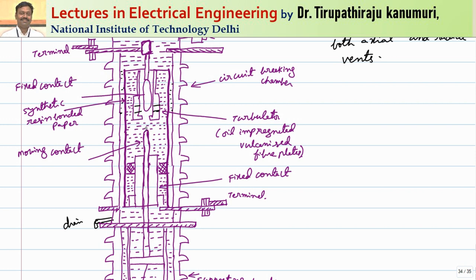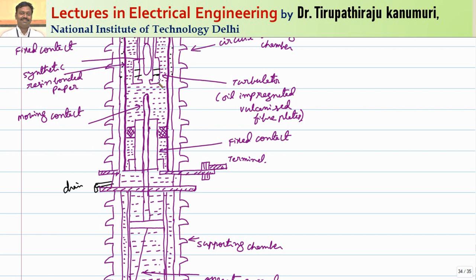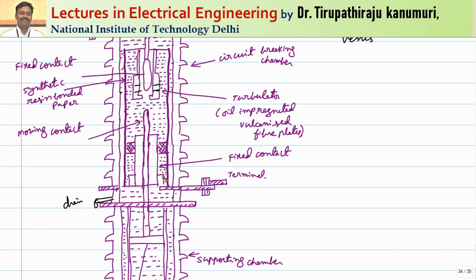Different circuit breakers use different arc quenching methods — similar to bulk oil circuit breakers, many methods exist here too. That is why different books describe different arc quenching materials and theories. The most commonly used method is using oil-impregnated vulcanized fiber plates. After the arc is extinguished, the oil replaces the gas and carbon deposits settle at the bottom of the chamber.